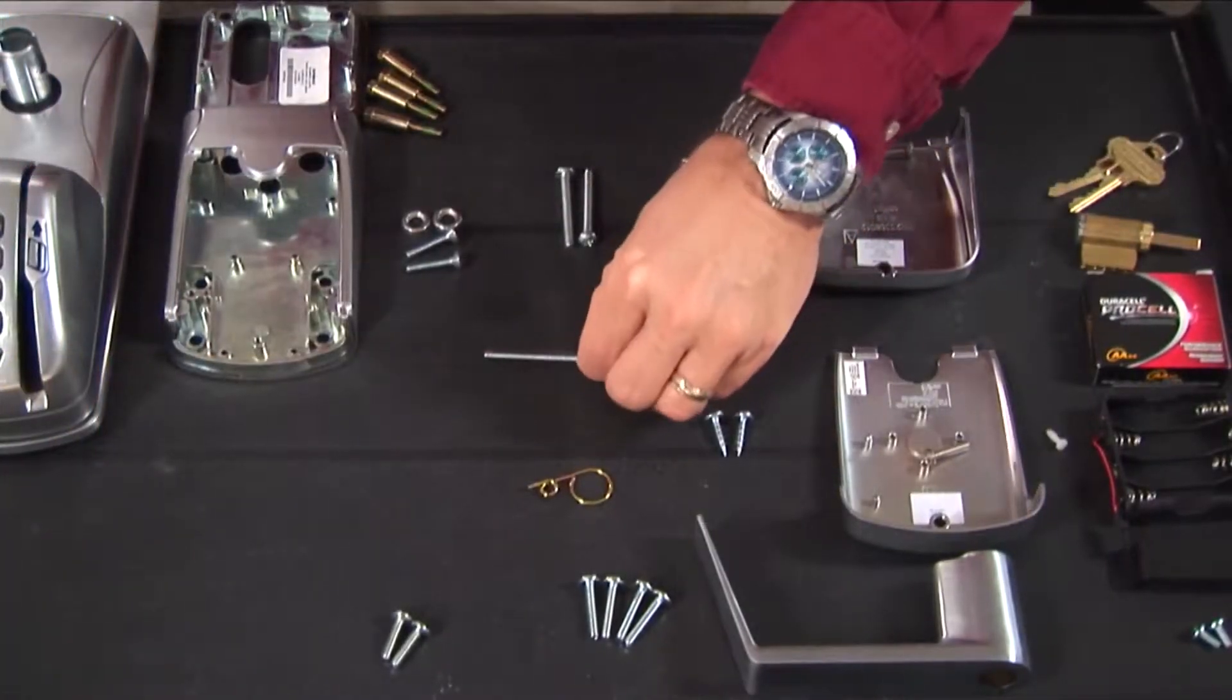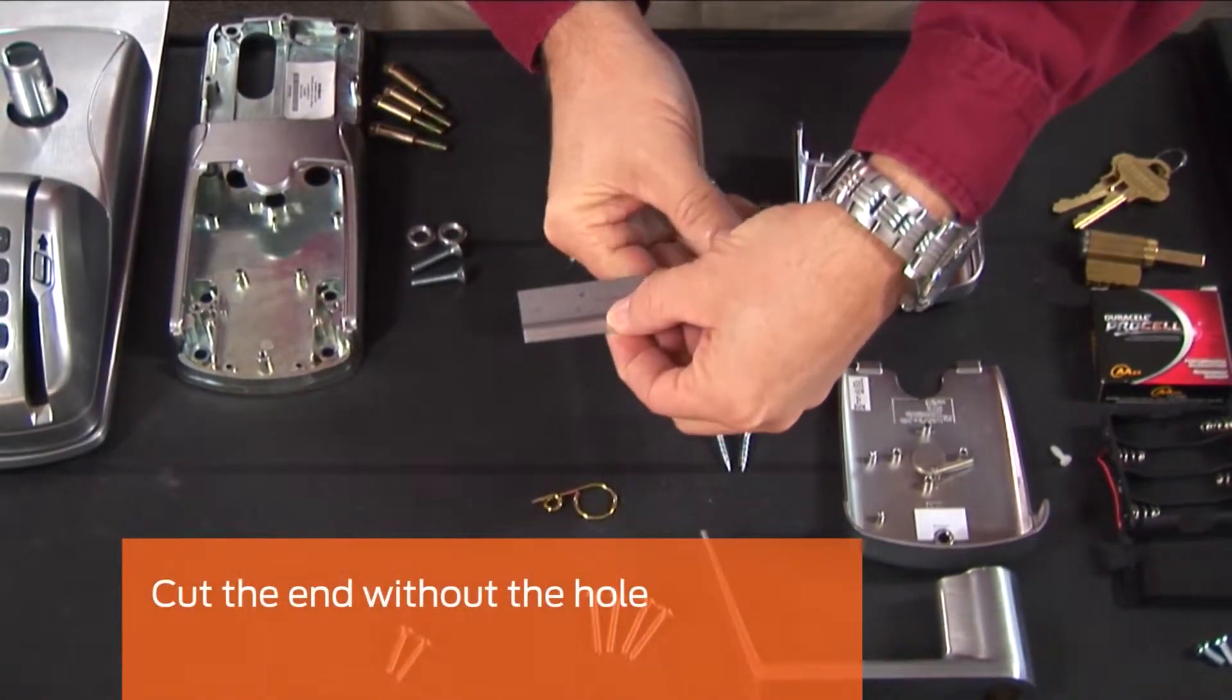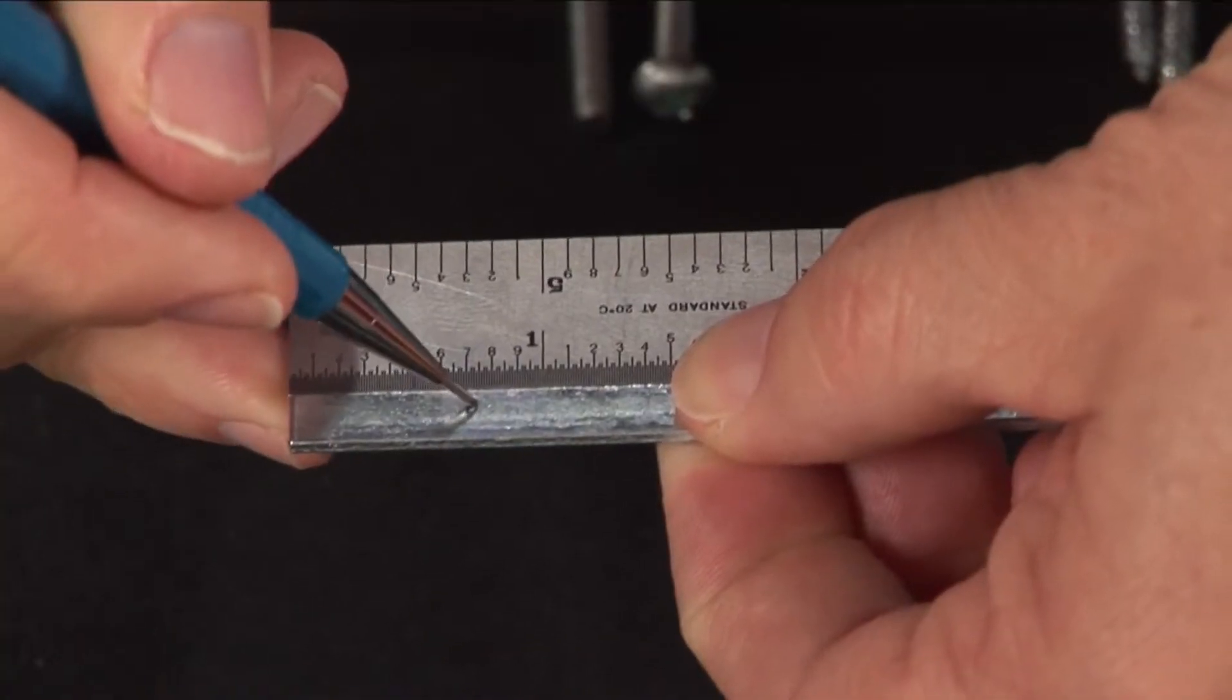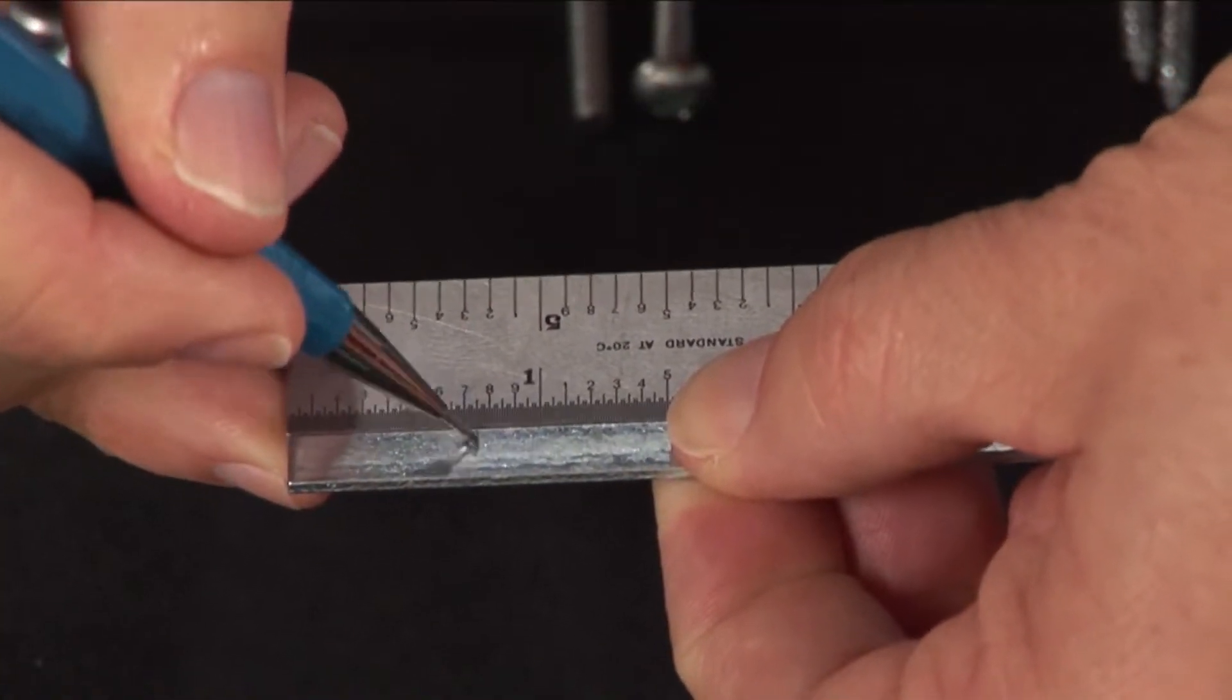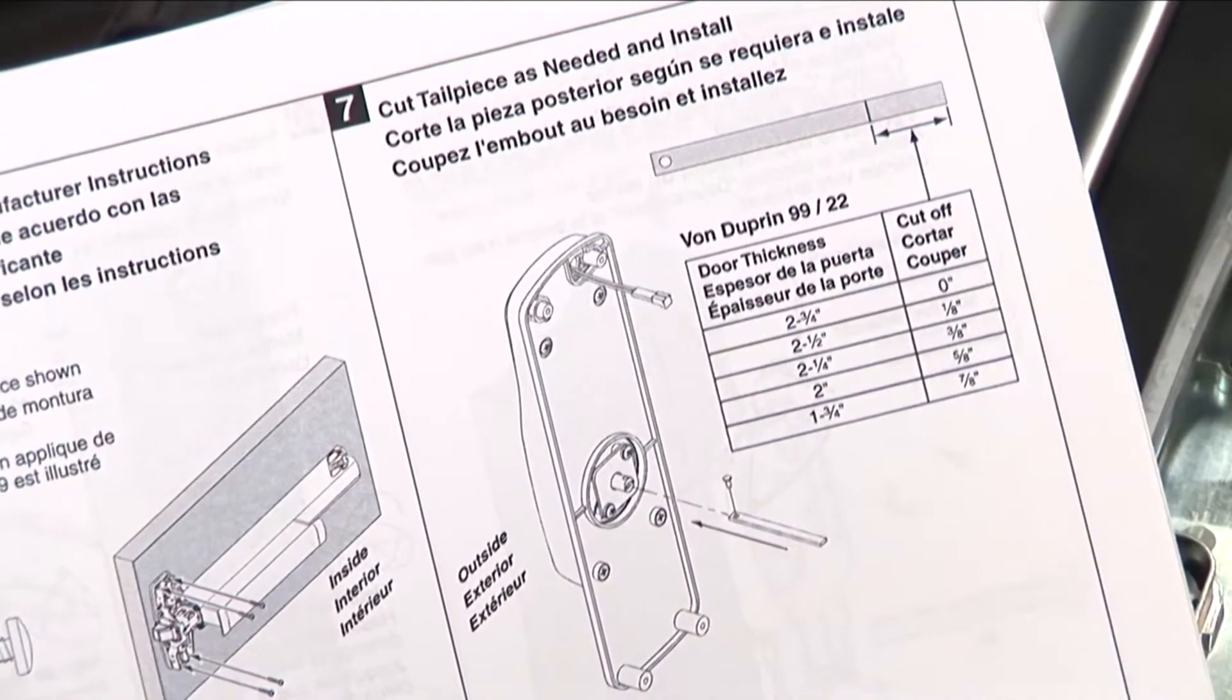Measure and cut the universal tailpiece as needed before installation. Make sure you cut the end without the hole. The length can vary so make sure you have the correct length before installing the tailpiece. Exact dimensions are indicated on the instructions.